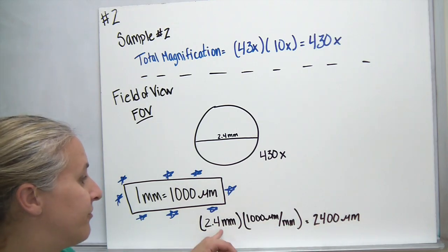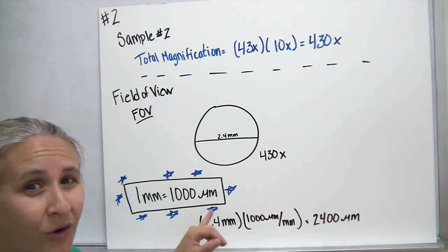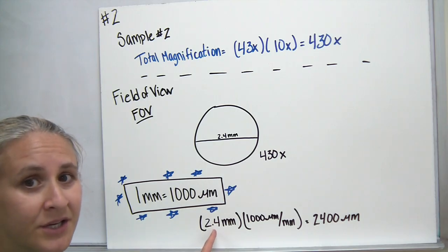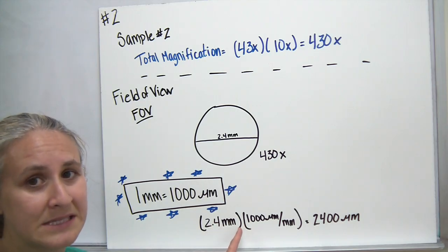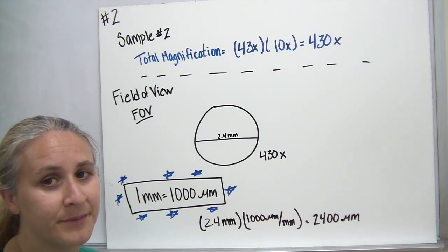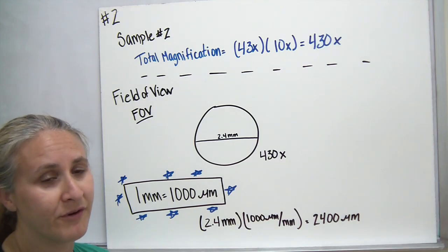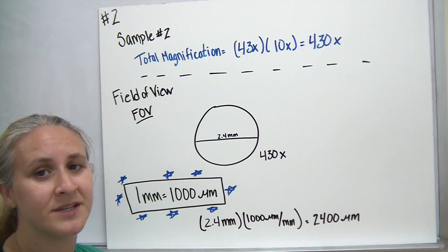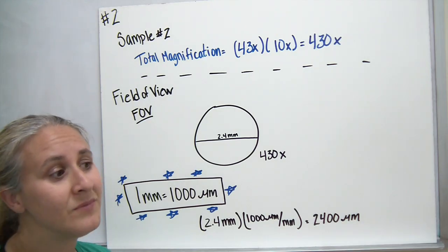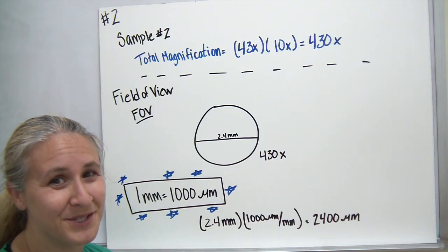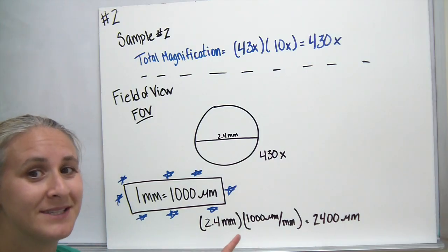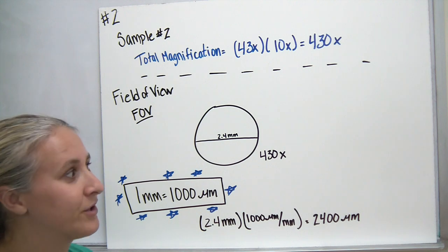When converting from millimeters to micrometers, you can also move the decimal point three places to the right. If you were going from micrometers to millimeters, instead of multiplying by 1,000, you would divide by 1,000 — or move the decimal point three places to the left.